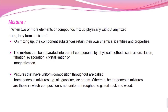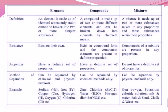Comparing elements, compounds, and mixtures: an element is made up of identical atoms only and cannot be broken down into two or more similar substances. A compound is made up of two or more different elements and can be broken down into elements by chemical methods only. A mixture is made up of two or more substances mixed in any proportions, and those substances retain their own properties.